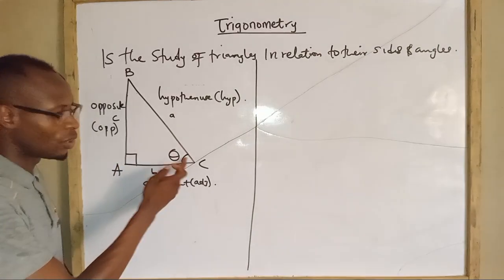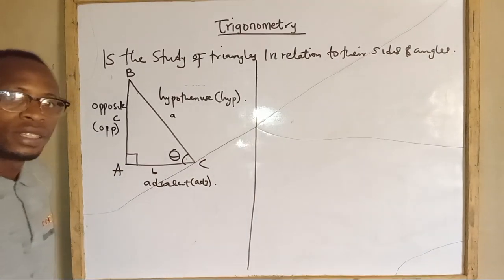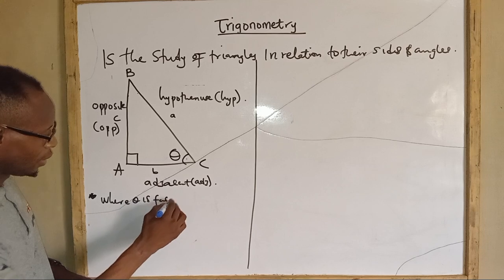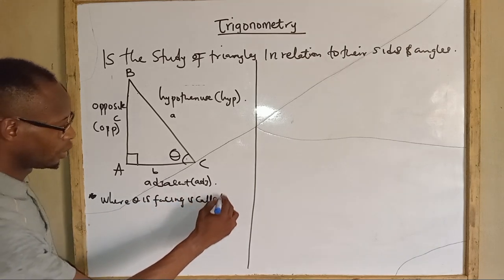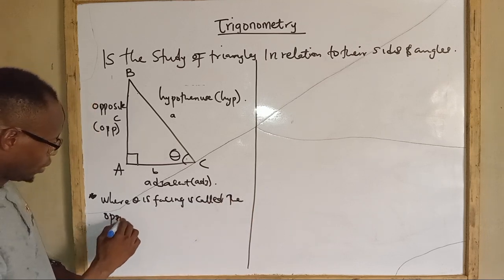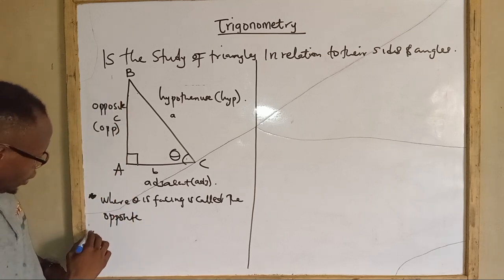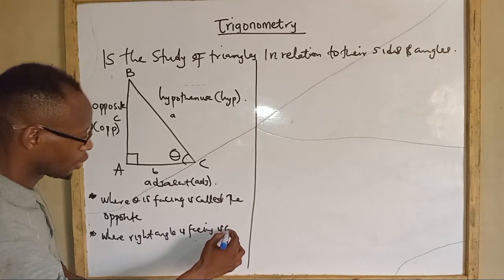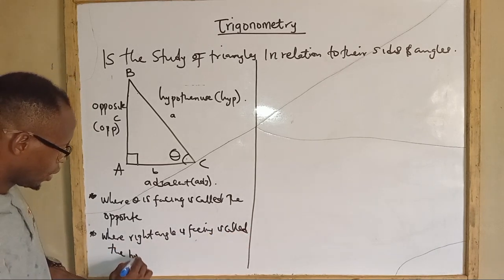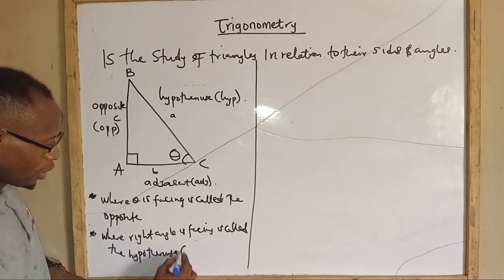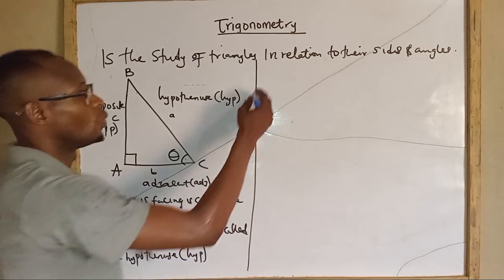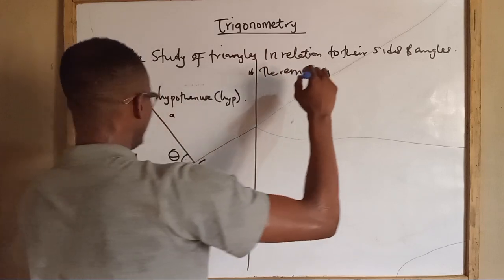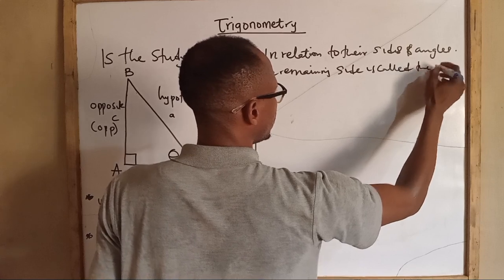To summarize: the adjacent side is where both the 90-degree angle and theta are sitting together. Let me put this in words: where theta is facing is called the opposite; where the right angle is facing is called the hypotenuse; and the remaining side is called the adjacent.